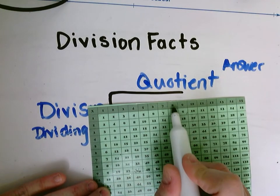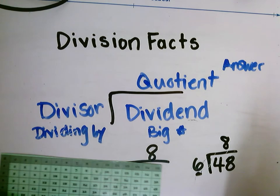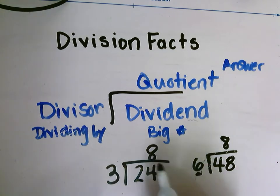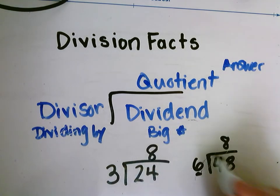I can use my chart as well. We want to try to use our chart less and less as we go through the school year, but if you're really stuck that is a good strategy to use. So for today's problems you're going to be finding the quotient of our basic facts.